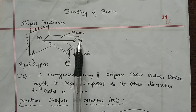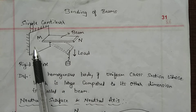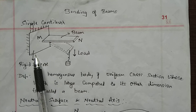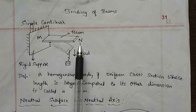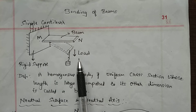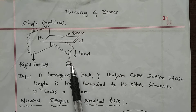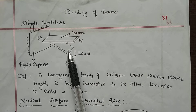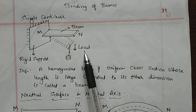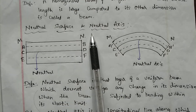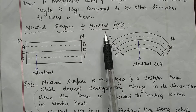Consider a beam MN connected to a rigid support — one end M is fixed to the rigid support and the other end N is free. Such a system is called a cantilever — a single cantilever. Whenever we apply a load to the free end, bending of the beam takes place. Now we will understand what exactly the neutral surface and neutral axis are with respect to beams.